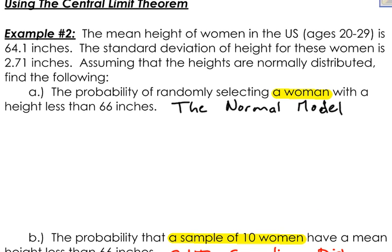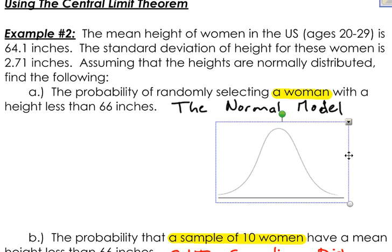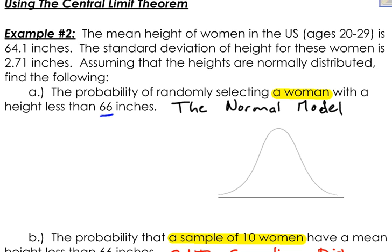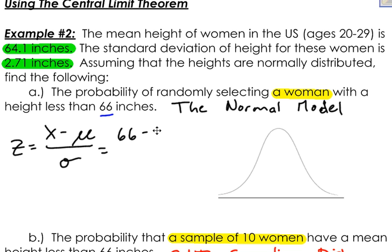Since this is for one woman, I can use a normal distribution because the example tells me that heights are normally distributed. All I have to do is find a z-score for 66 inches, place that on my picture, shade appropriately, and then find the area of the shaded region. The z-score formula for the normal model is x minus the population mean, divided by the population standard deviation. Here x is 66, the population mean is 64.1 inches, and the standard deviation is 2.71 inches.